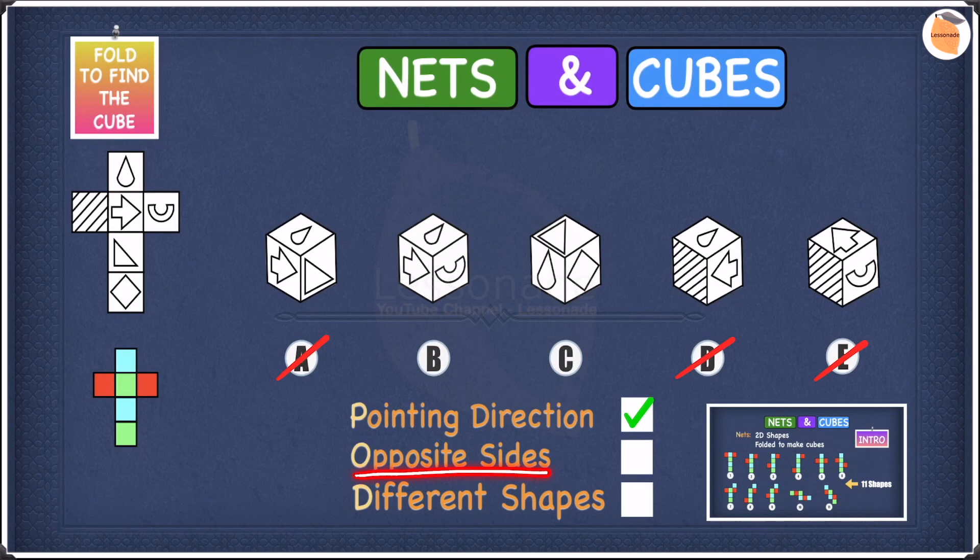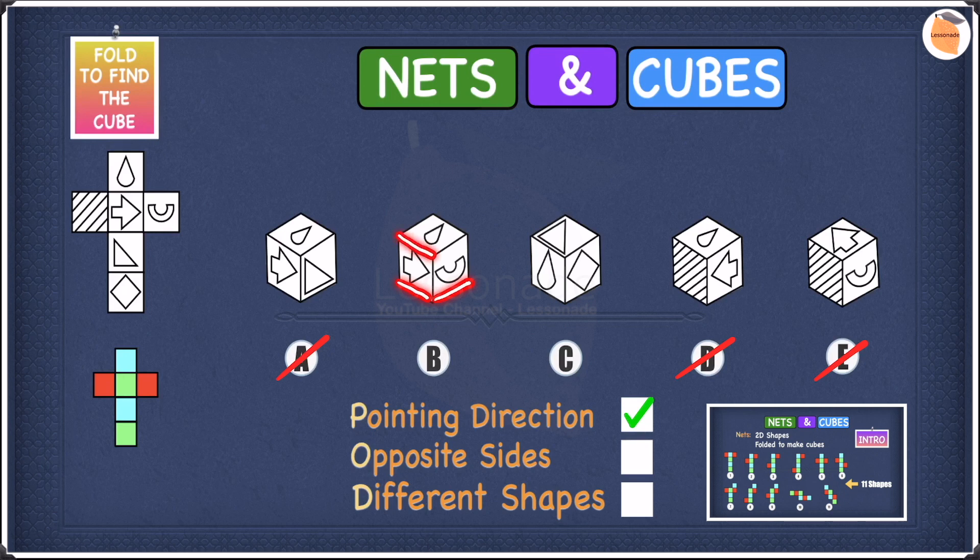Now let's use opposite sides for B. The shapes we have at B are an arrow, a semicircle, and a raindrop. So these are the three shapes we have. Let's have a look at where these three shapes are in terms of the net. So we have the raindrop, we have the arrow, and we have the semicircle.